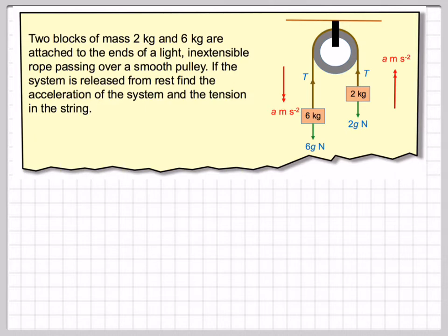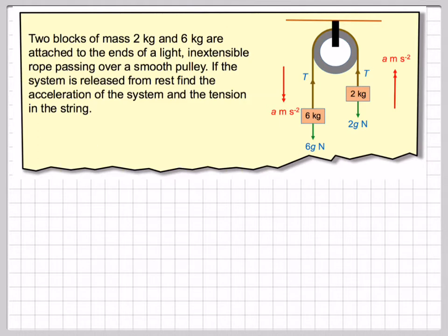So if the system is released from rest, find the acceleration of the system and the tension in the string. For this problem, you consider the weight to be downwards when you consider the larger mass, and upwards when you consider the smaller mass.